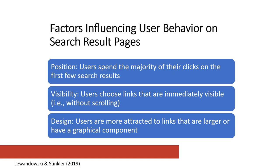The first is position. The most important thing is that users spend the majority of their clicks on the first few search results. Another thing is that users choose links that are immediately visible — that is, links they can see without scrolling. And finally, users are more attracted to links that are larger or have a graphical component.